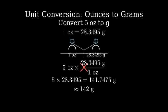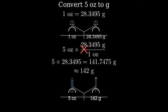Let's visualize what this means. Here we have 5 ounces on one side of our scale, and the equivalent 142 grams on the other side. They represent the same mass, just measured in different units.